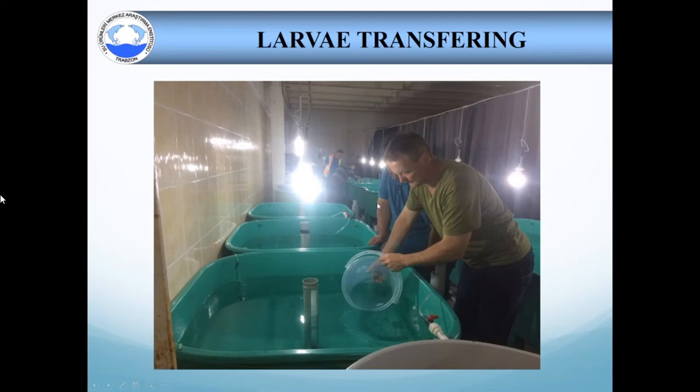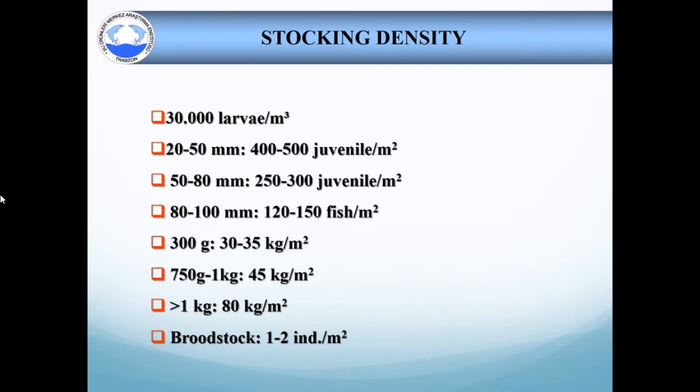The initial stock density of larvae is around 30,000 individuals per cubic meter. Since the larvae start to sit on the tank bed at 20 mm total length, about 40 days old, the surface of the tank bottom becomes more important than the tank volume. After that, the stock density of fish is calculated based on surface area for this phase. Also, the stock density depends on the size of fish. You can see in the slide.